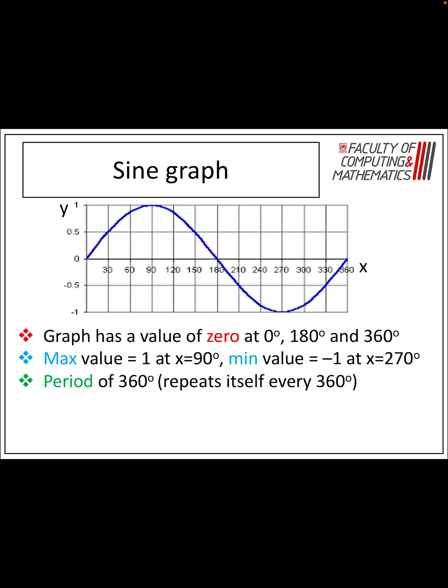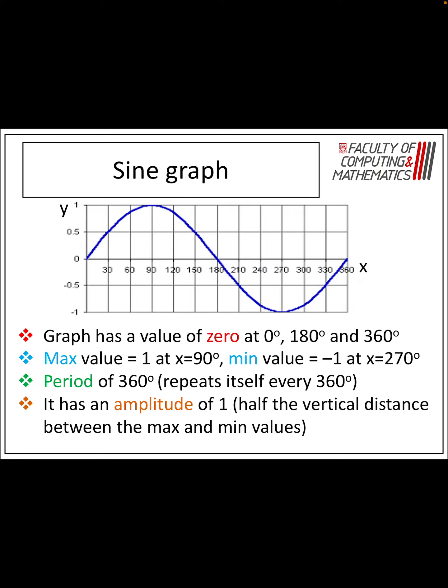The period — it's got a first full cycle between 0 and 360 degrees, so it repeats itself every 360 degrees. And it's got an amplitude of 1, so that's half the vertical distance between the maximum and minimum values.